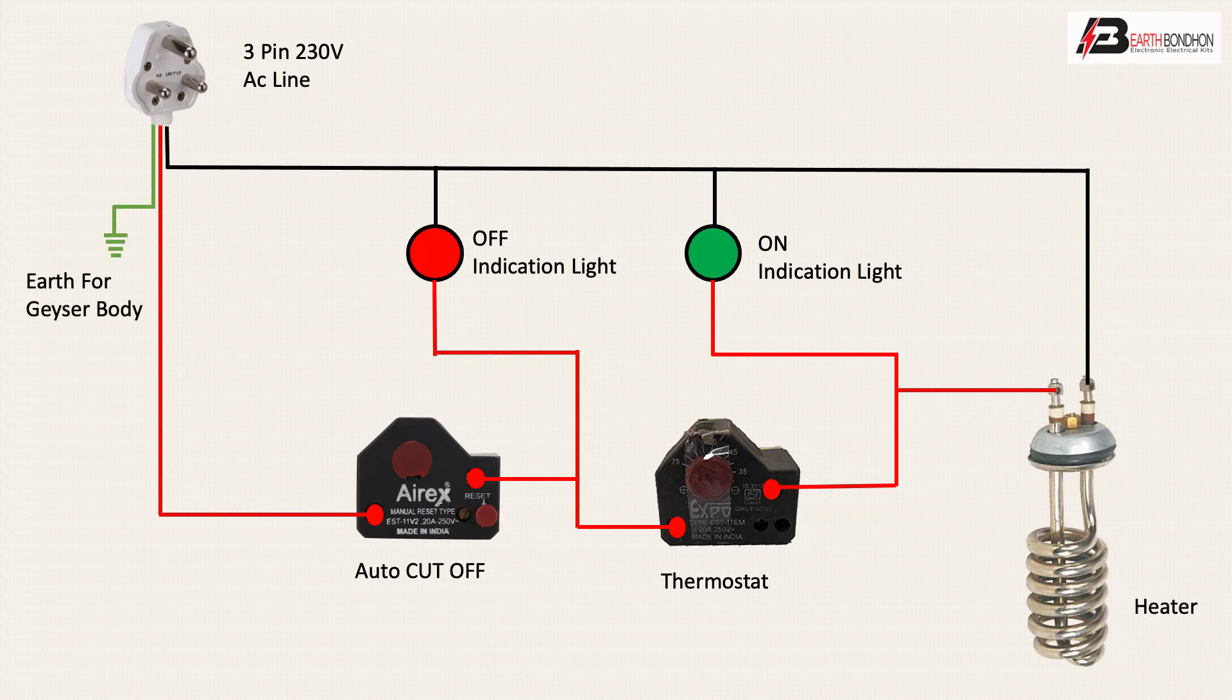Earthing connection for the geyser body - earth line connects to body for safety. This is a simple way to connect a geyser. The geyser device has three main parts: auto cut-off, thermostat, and coil. Thank you.